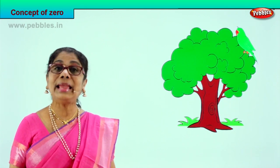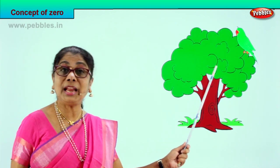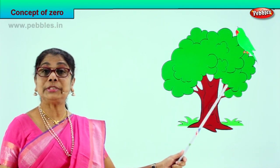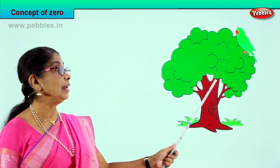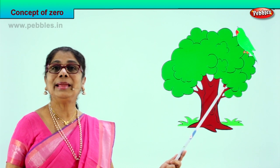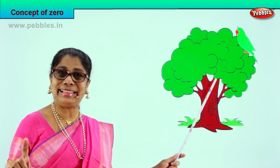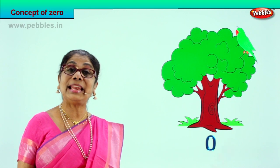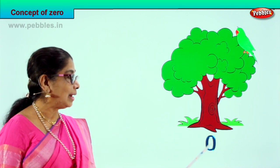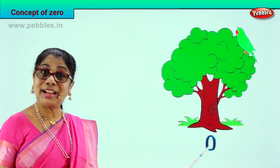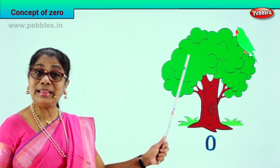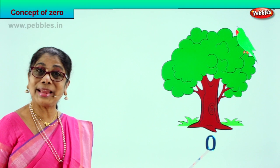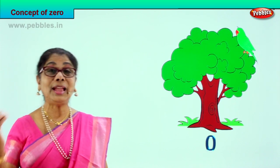How many apples did we have? Six. The little parrot ate all six apples from the tree. How many apples are left? Nothing. The concept of zero — nothing. The bird ate all the apples and the tree is left empty, so we write zero. There were six, the bird ate up everything, the tree is now empty, so you write zero. Understanding what is zero.